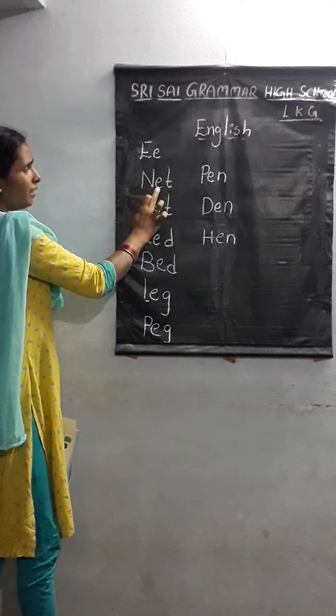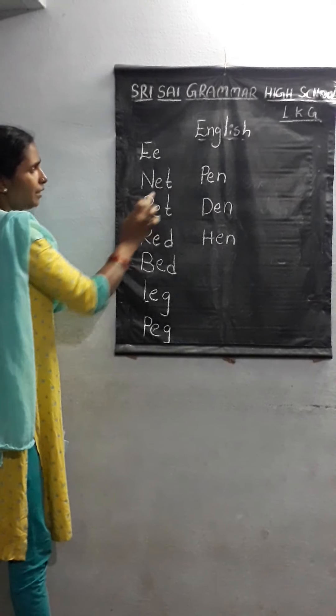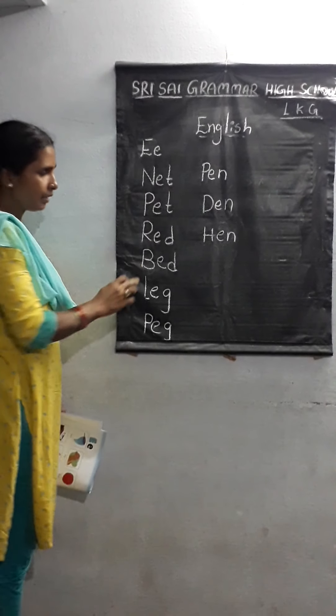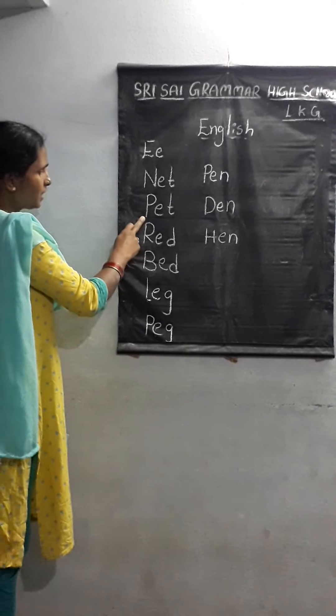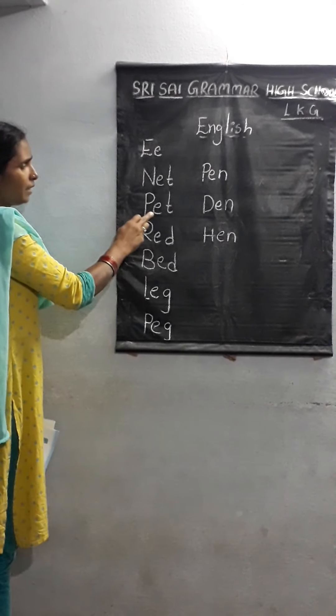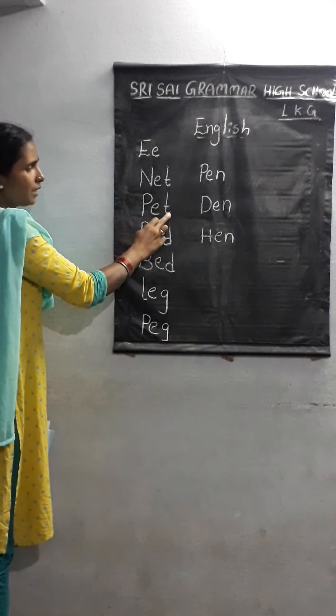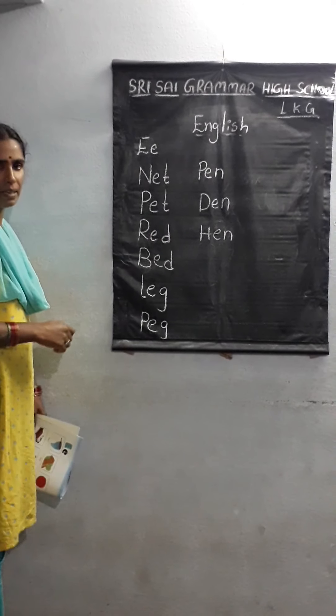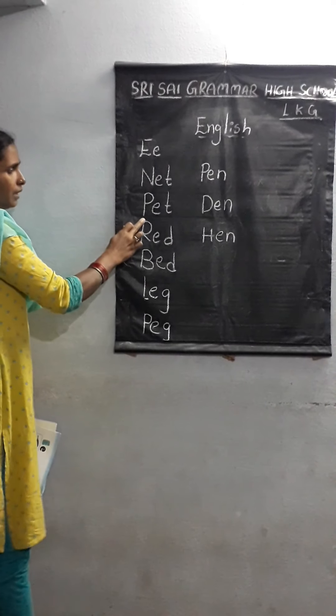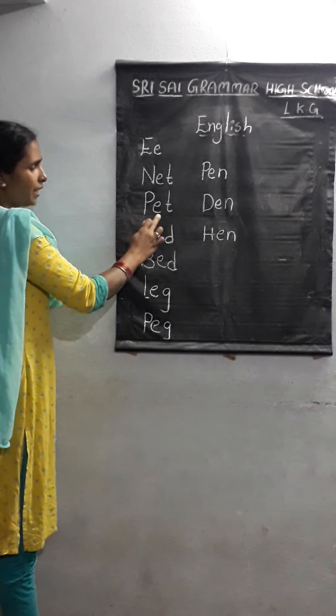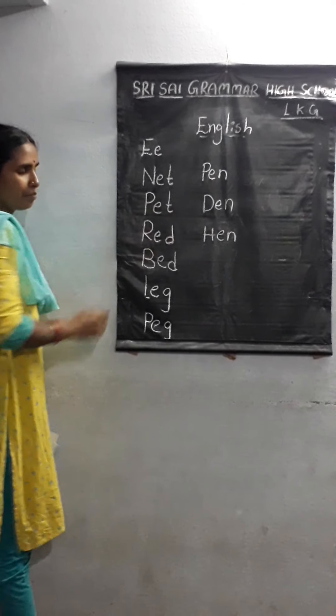Read now one more time. N-E-T. Net. N-E-T. Net. Now next: P-E-T. Pet. P-E-T. Pet.